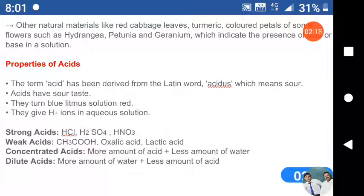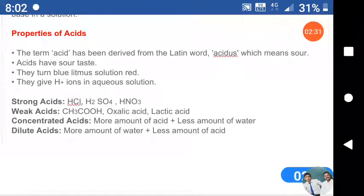The term acid has been derived from the Latin word acidus which means sour. Acids have sour taste, they turn blue litmus solution red, they give H+ ions in aqueous solution. Strong acids: HCl, H₂SO₄, HNO₃. Weak acids: CH₃COOH, oxalic acid, lactic acid.